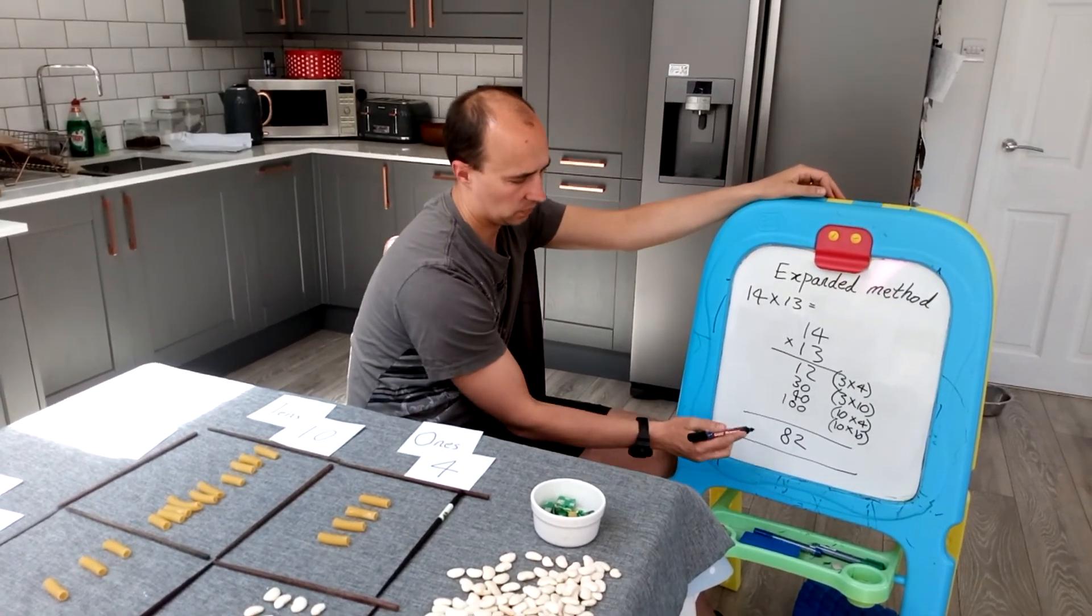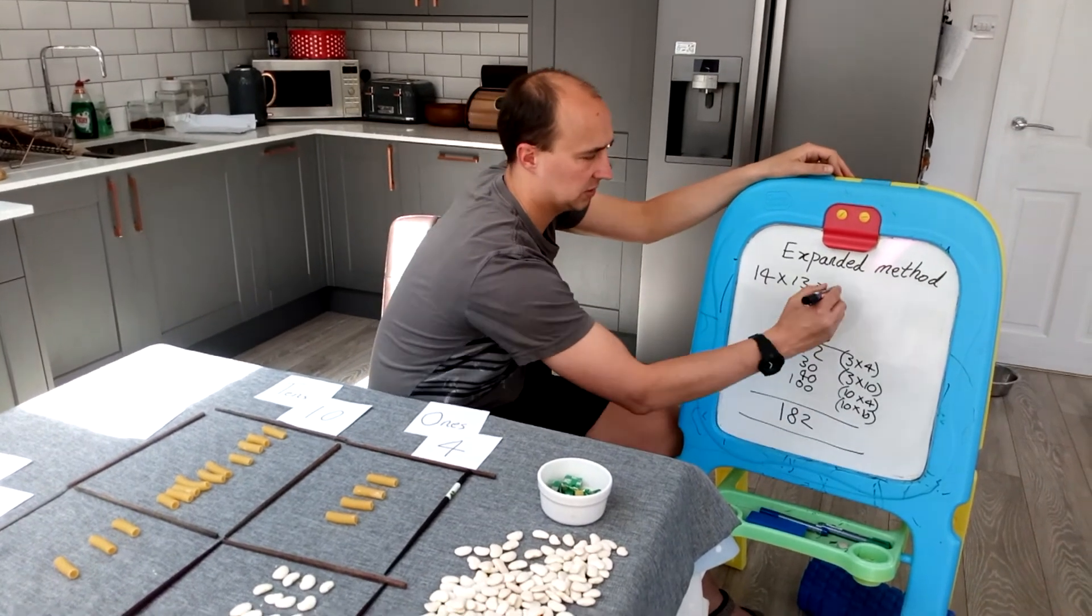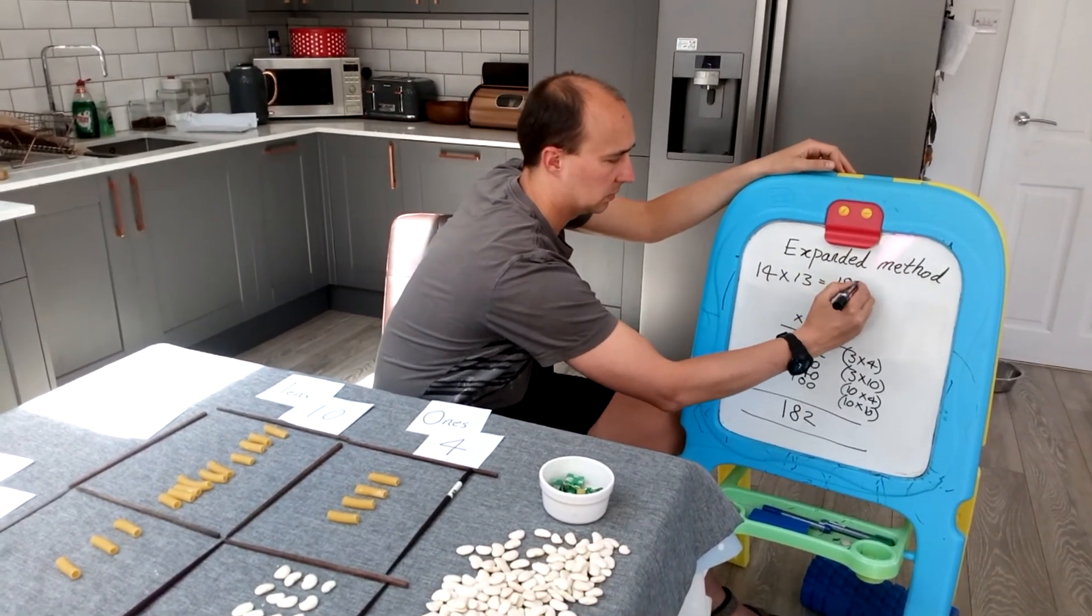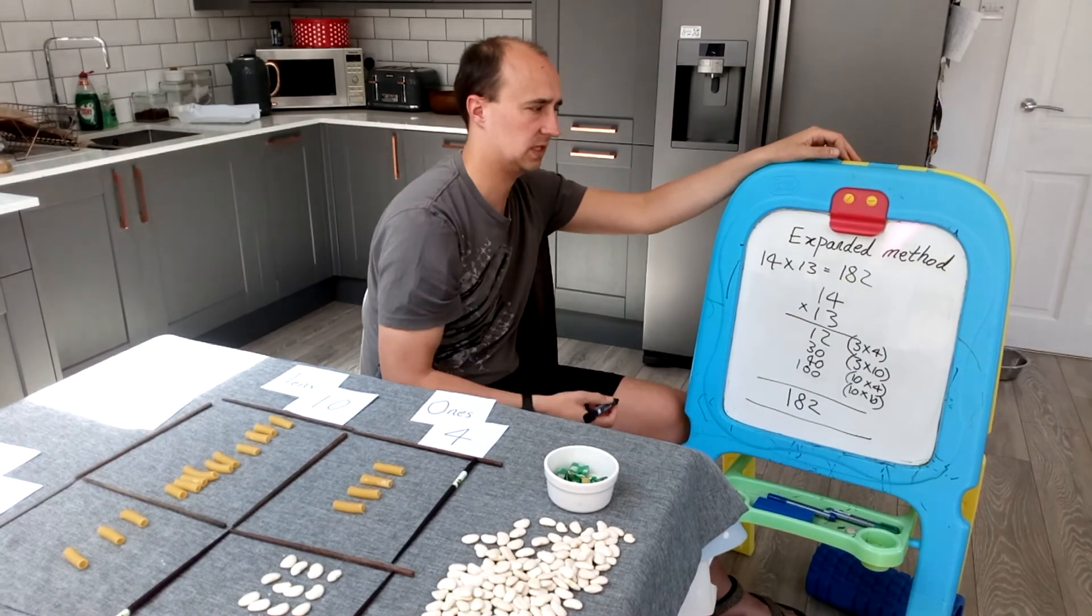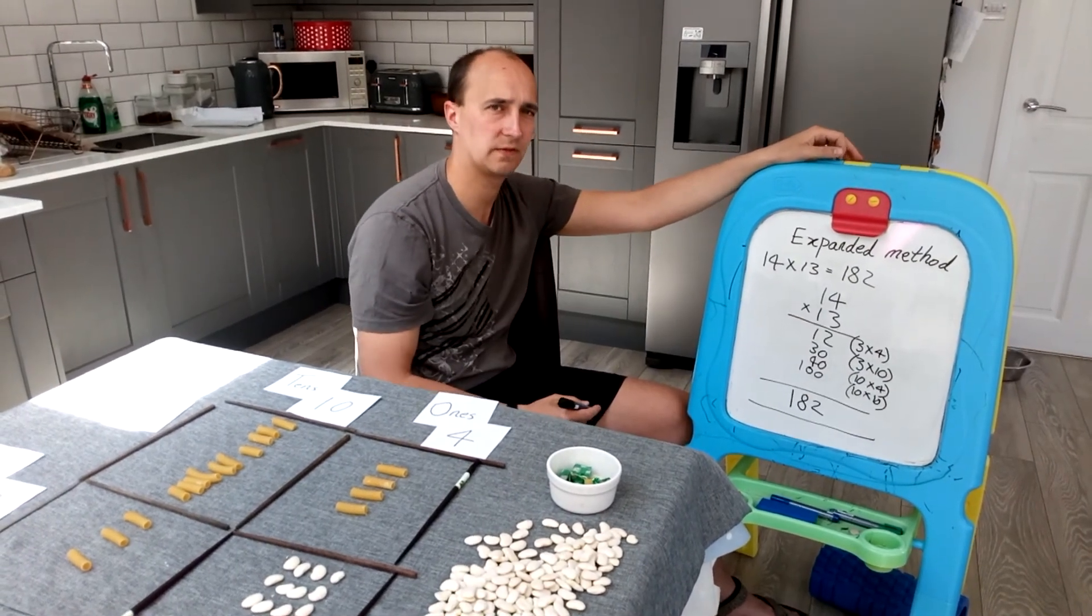And then I've got 1 in my 100s. So 182. So 14 multiplied by 13 is 182 in the abstract form.